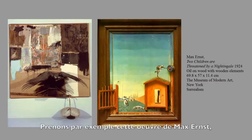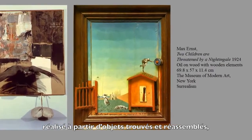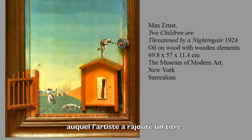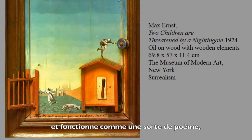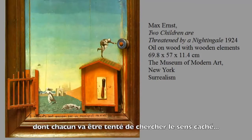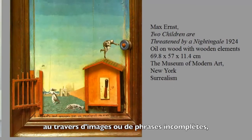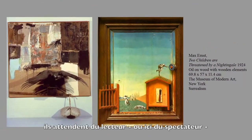Max Ernst's work is sort of a combine if you think about it — stuff he found, put back together, with a fancy title applied. In this case, 'Two Children Are Threatened by a Nightingale,' which is very suggestive, almost like a piece of poetry. And then you make up a meaning for that. What they're doing is using the way some poets do it — offering up some imagery, a couple of incomplete phrases, and expecting the viewer or reader to make up a new meaning as they look at it.